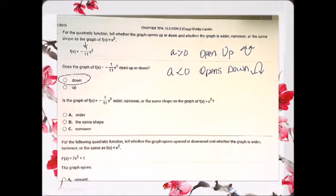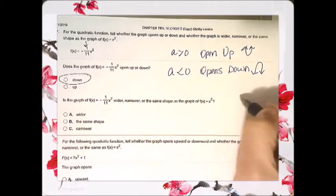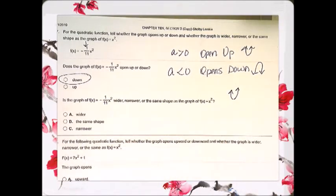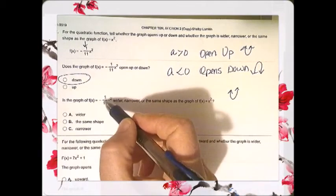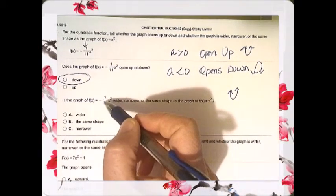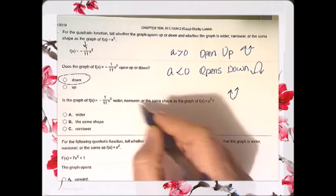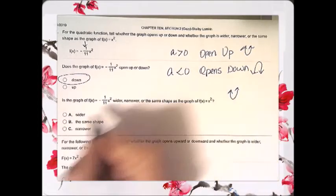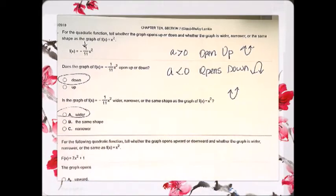Now, is it wider or narrower? Well, the parent function would be x squared. If you have a value, a coefficient that is less than 1, and that one is less than 1, if its absolute value is less than 1, we're going to disregard its sign and just talk about its absolute value, then it's going to be wider. If the number in front of x squared, if x squared's coefficient is greater than 1, then it's going to be narrower.